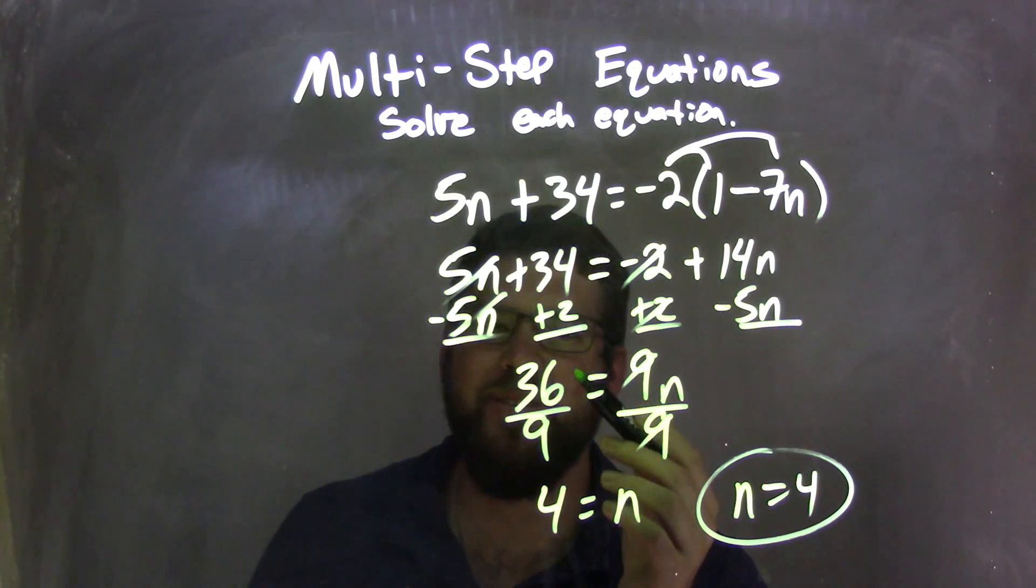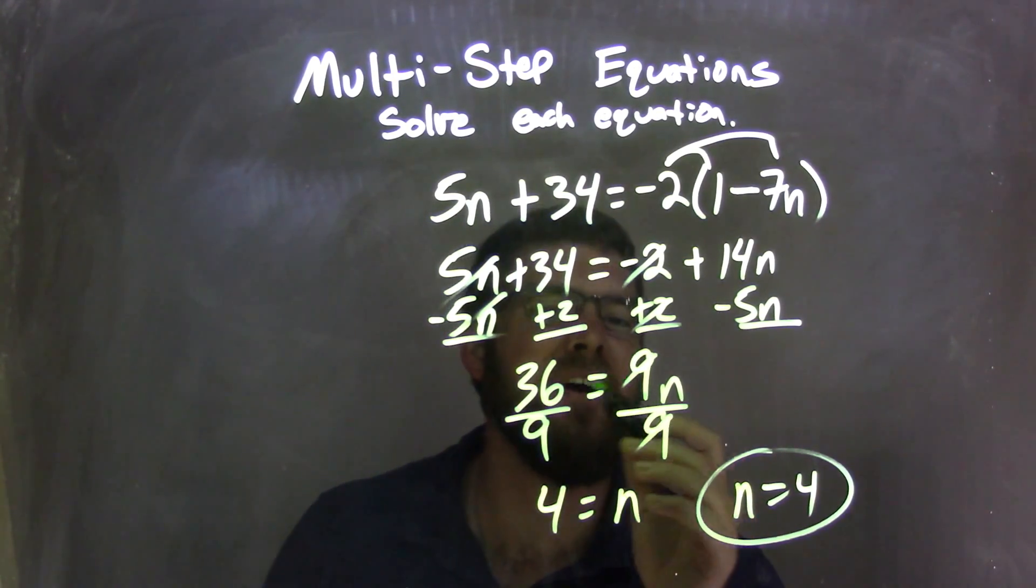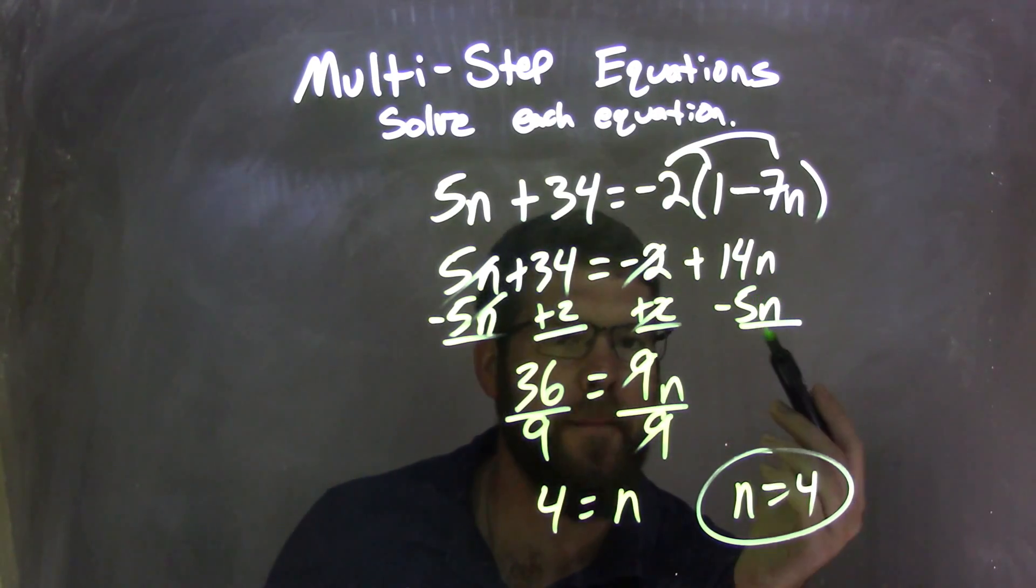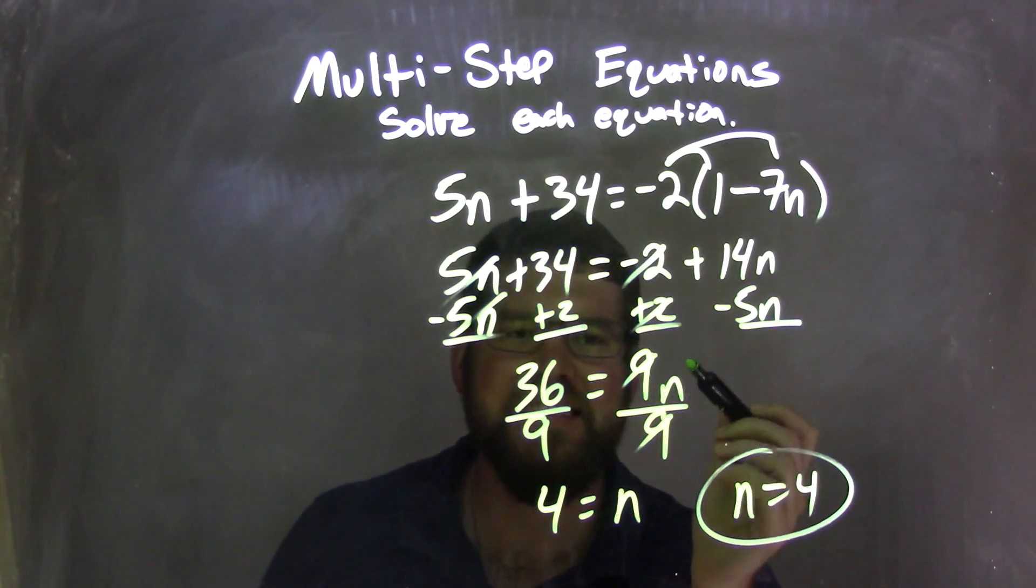34 plus 2 is 36, getting ahead of myself there, equals 14n minus 5n, which is just 9n.